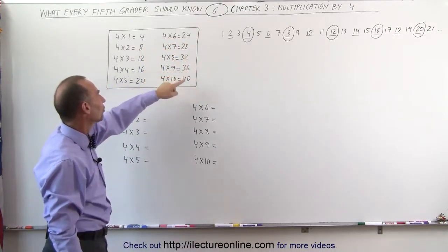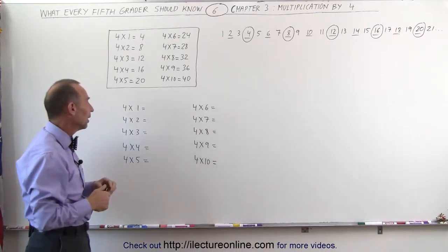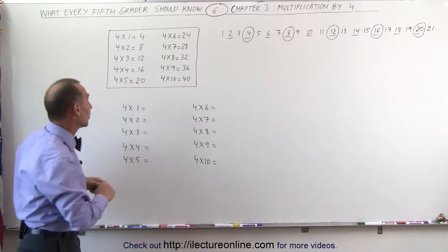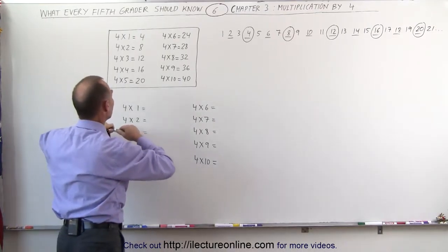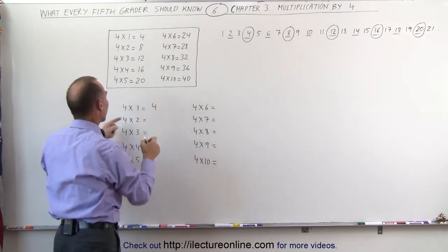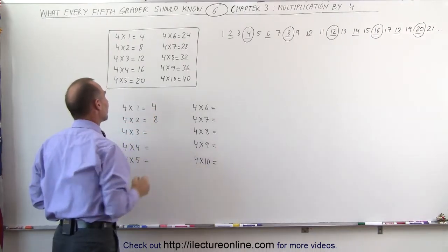There are some other tricks you can use in your head when you do multiplication. The first two are fairly easy, because 4 times 1, everybody knows that to be 4. 4 times 2, that's easy, that is 2 times 4, which is 8.